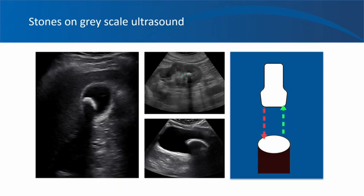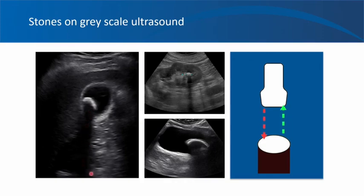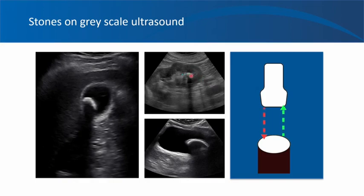Here are some examples of stones in various organs. This is the transverse section of the gallbladder with a hyperechoic stone giving a black band of acoustic shadow. And here is an example of a stone in the kidney — this is the upper pole, this is the lower pole — you see a stone in the lower pole of the kidney as a bright structure followed by a long hypoechoic to anechoic shadow.